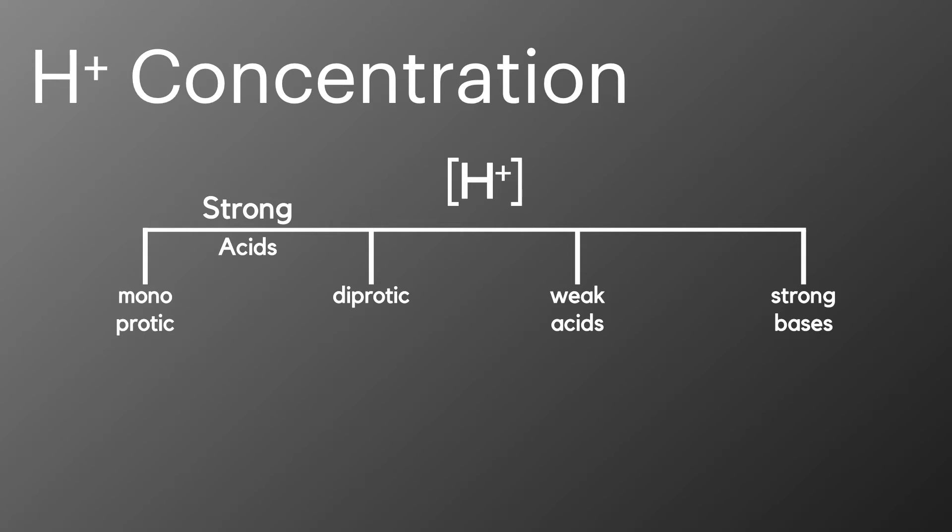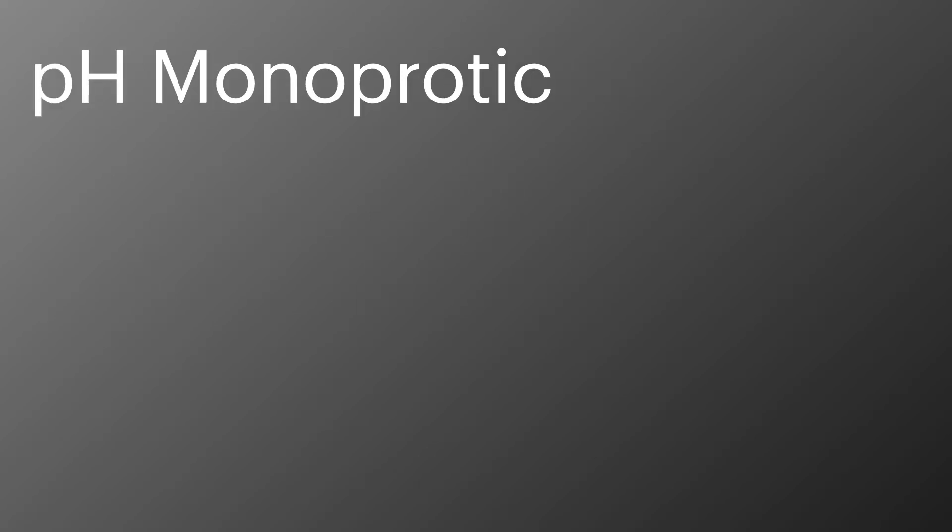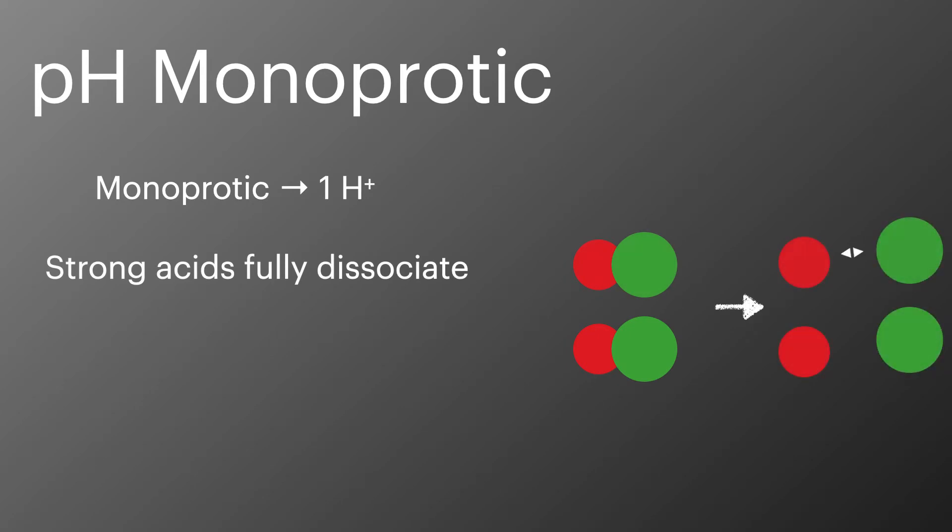We'll start with a monoprotic acid. Monoprotic acids have only one proton. They are strong acids and they fully dissociate. Examples of this are hydrochloric acid and nitric acid. So then the concentration of the acid is equal to the concentration of hydrogen ions. This makes working out the concentration of hydrogen ions really easy.